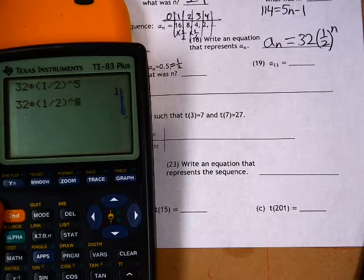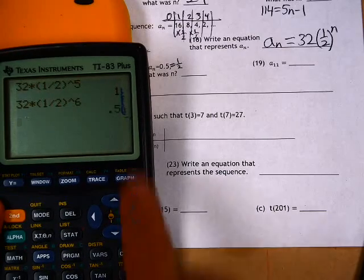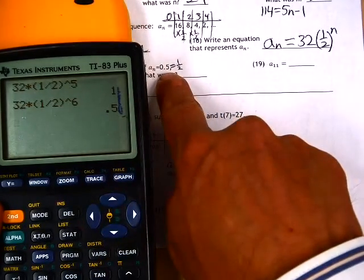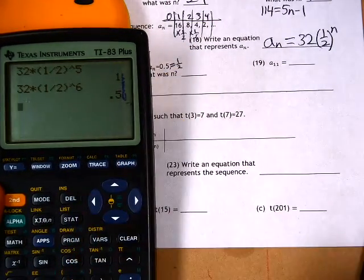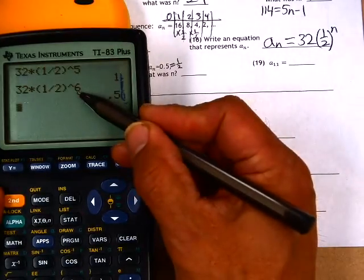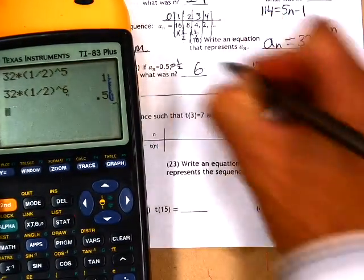1 divided by 2 to the power of 6 gives 0.5, which is what I was looking for. If this wasn't close enough, try either bigger numbers or smaller numbers as you go. So I know that the n value was 6.